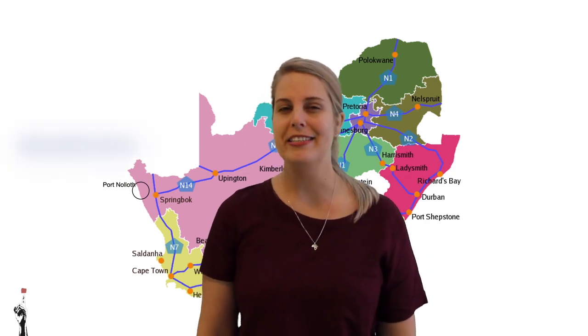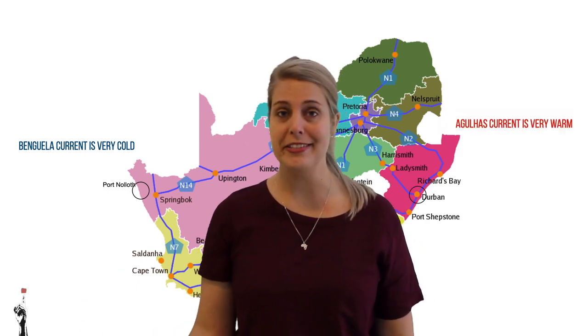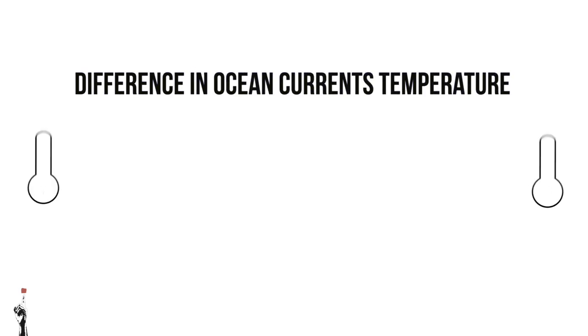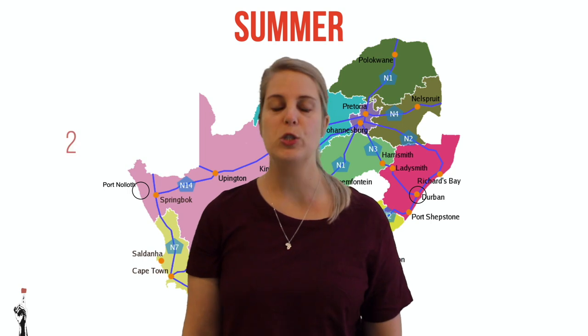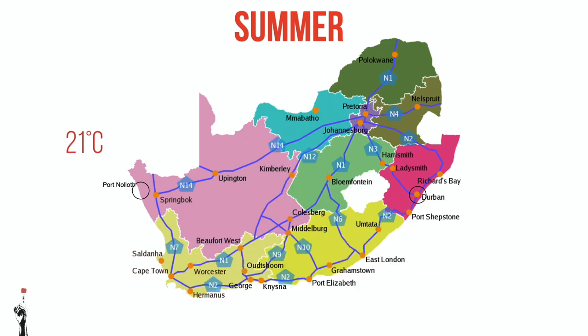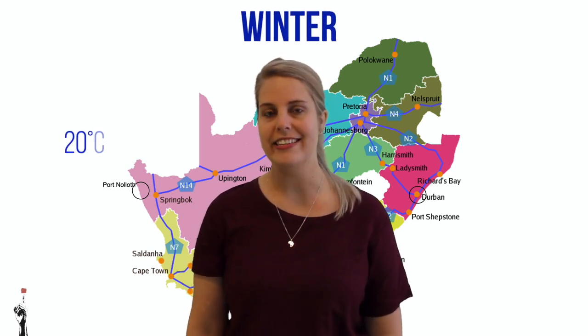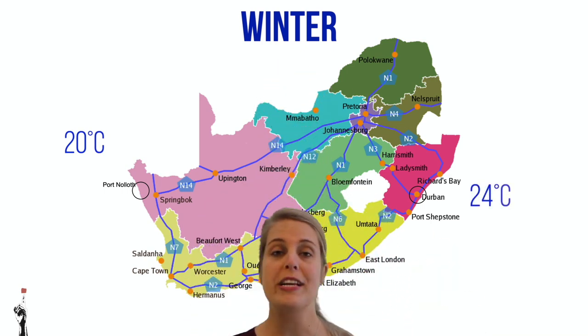Port Nolloth is located on the west coast of South Africa, where the ocean current is very cold. On the other side of the country, Durban experiences a very warm ocean current. Because of the different ocean current temperatures, these places experience different air temperatures too. The average summer temperature for Port Nolloth is 21 degrees Celsius compared to Durban's 29 degrees Celsius. In winter, Port Nolloth averages 20 degrees Celsius at the hottest time of day while Durban averages 24 degrees Celsius.